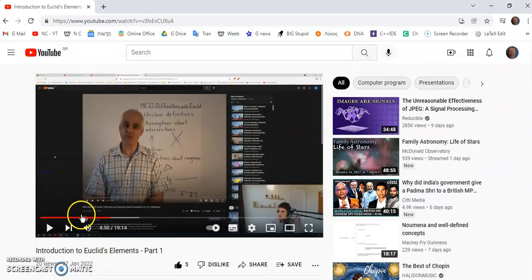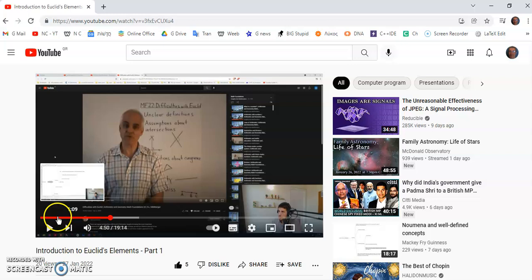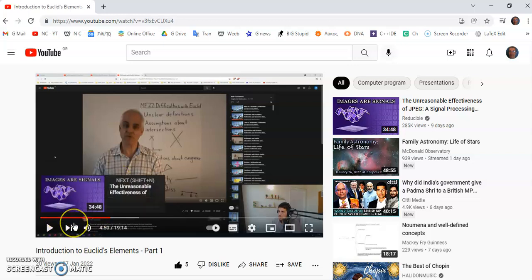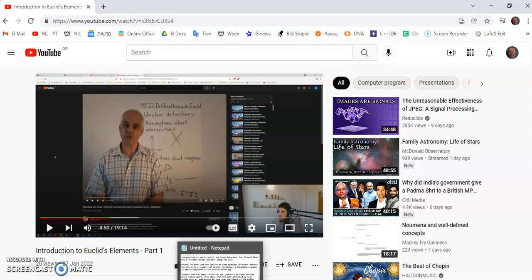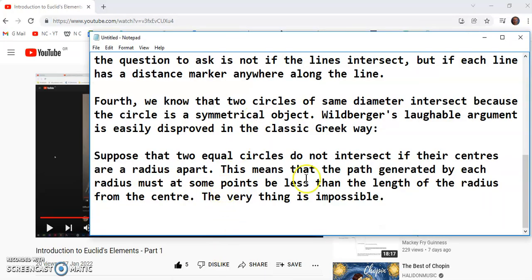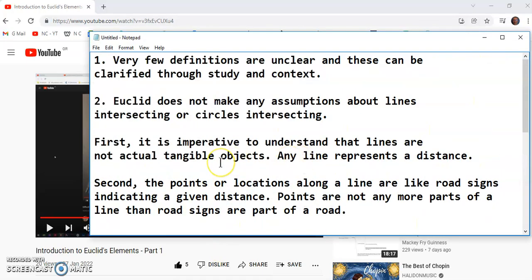Now, just a quick thing here. Wilberger starts this video by saying that there are unclear definitions in Euclid's Elements. So there are some unclear definitions, but these can be clarified through study and context.